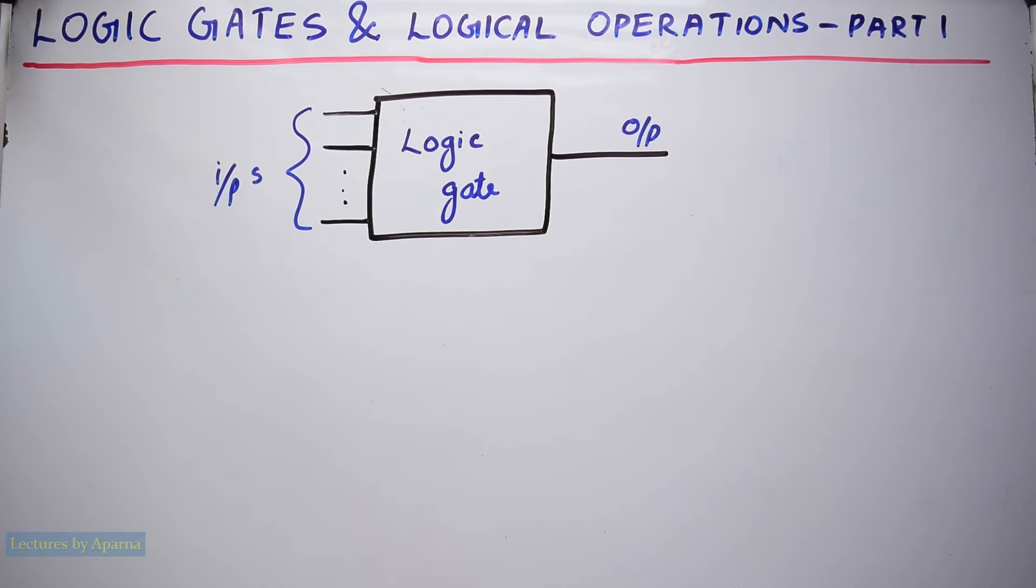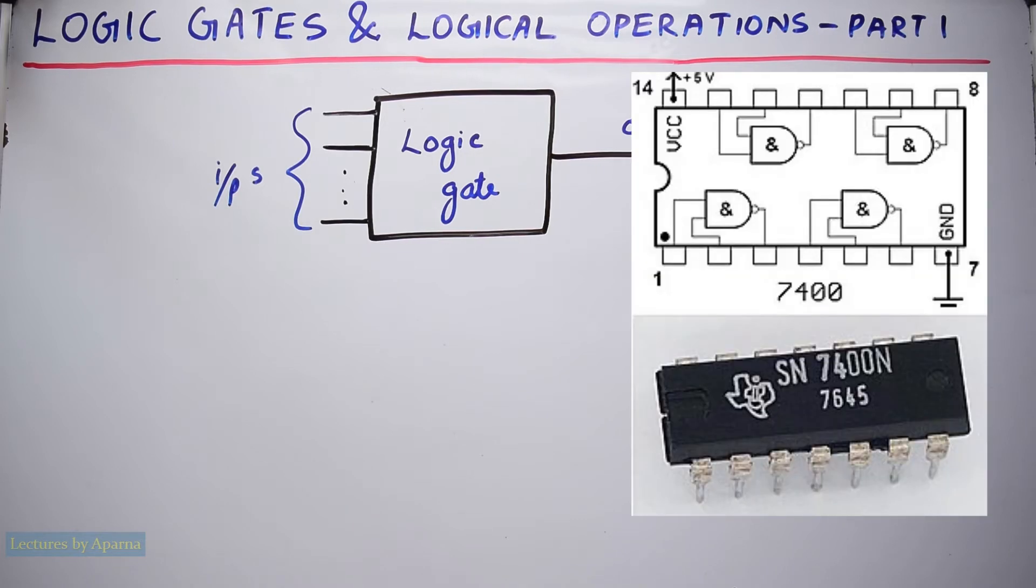How does a logic gate look like? Logic gates actually come in ICs like this. In each IC there will be many logic gates.